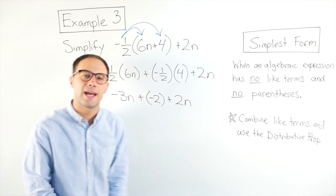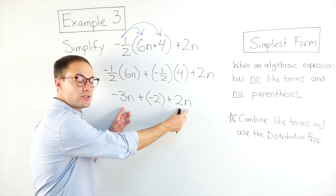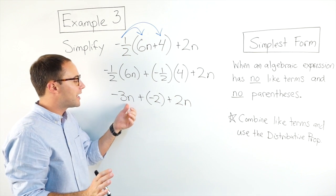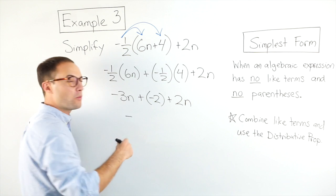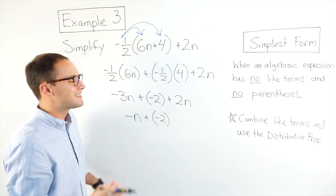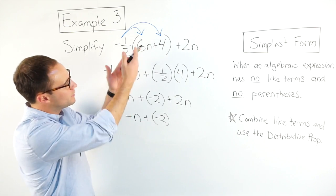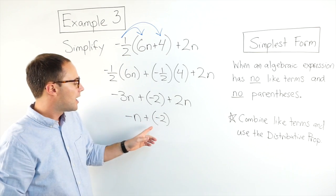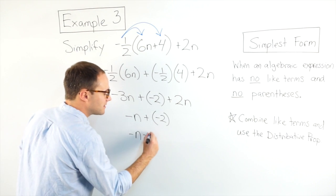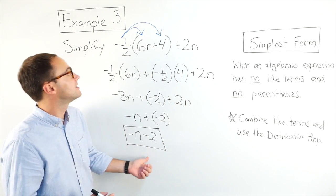Now let's combine like terms. Negative 2 is the only constant, so that's by itself. Negative 3n and 2n are like terms — they're both just n to the first power. Negative 3n plus 2n is negative 1n, which I'll write as just negative n, plus negative 2. Lastly, we can't have parentheses, so I'll change it back to a subtraction: this becomes negative n minus 2. There are no like terms and no parentheses, so this is in simplest form.